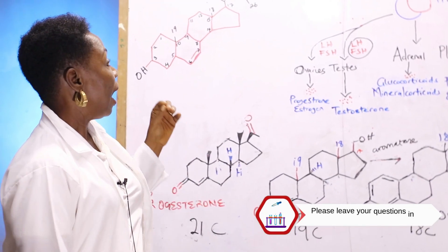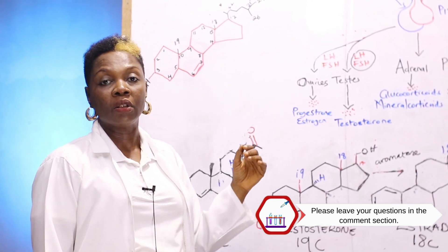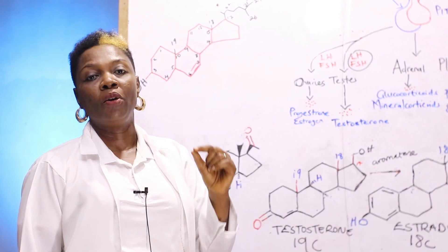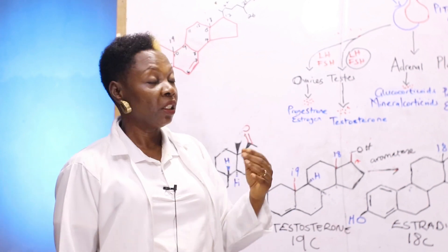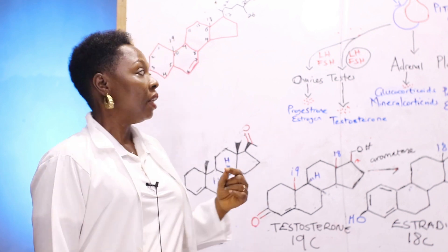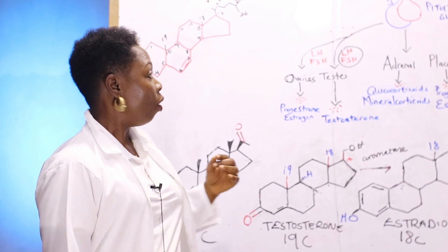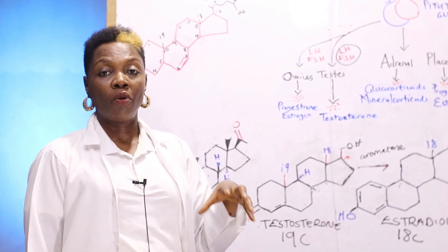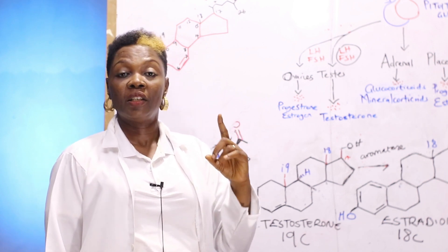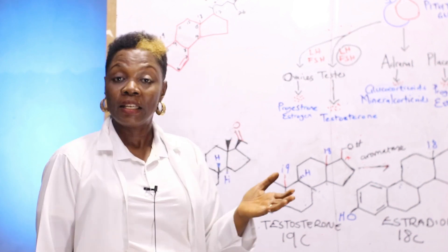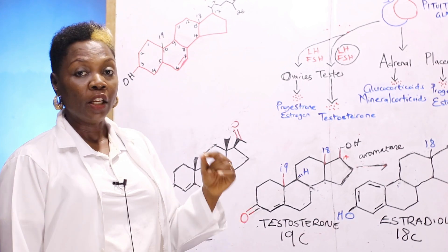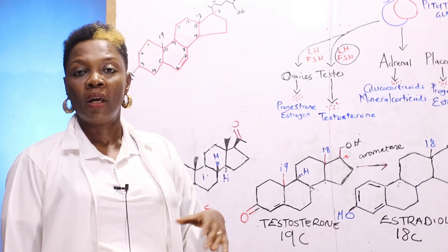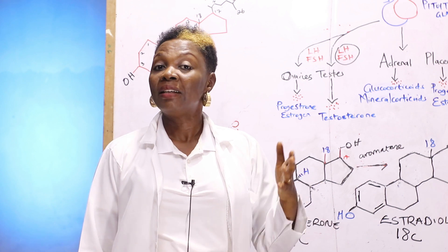The other hormones that are not derived from cholesterol or steroid compounds are the amino acid derivatives. These hormones take their parent compound from a single amino acid structure — for example, melatonin, and thyroxine, which is derived from the thyroid. We also have hormones derived from proteins. This class of hormones has a sequence of amino acids — more amino acids compared to hormones derived from a single amino acid. A classical example is insulin. Insulin has a sequence of about 51 amino acids and plays a major role in glucose metabolism.